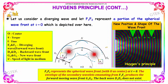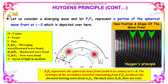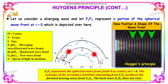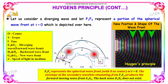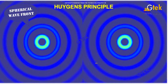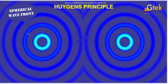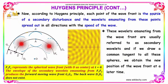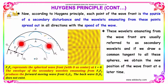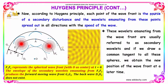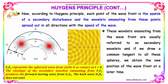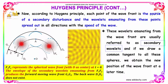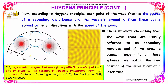Let's consider a diverging wave represented as F1 and F2, which is a portion of the spherical wavefront at time t equal to 0. According to Huygens' Principle, each point of the wavefront is considered to be the source of a secondary disturbance, and the wavelets emanating from these points spread out in all directions with the speed of the wave. These wavelets are referred to as secondary wavelets. If we draw a common tangent to all these spheres, we obtain a new position of the wavefront at a later time.